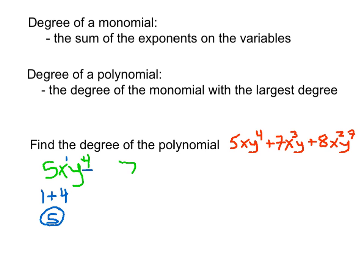The second term is 7x to the third, y. We look at how many variables are being multiplied: we have three x's and one y. So the degree of this monomial is 3 plus 1, which equals 4.